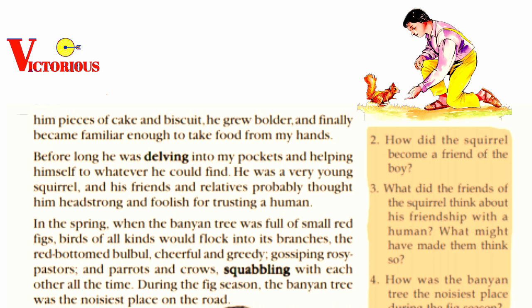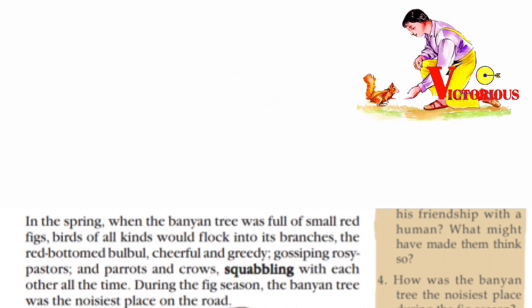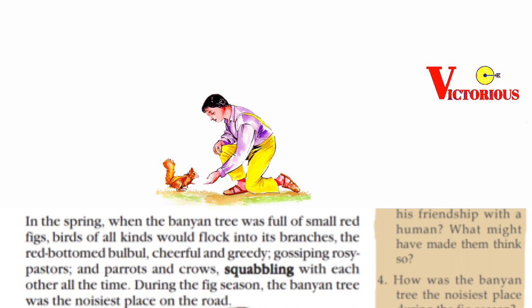Let's move to the next paragraph: In the spring, when the banyan tree was full of small red figs, birds of all kinds would flock into its branches — the red-bottomed bulbul, cheerful and greedy; gossiping rosy pastors and parrots; and crows squabbling with each other all the time. During the fig season, the banyan tree was the noisiest place on the road.